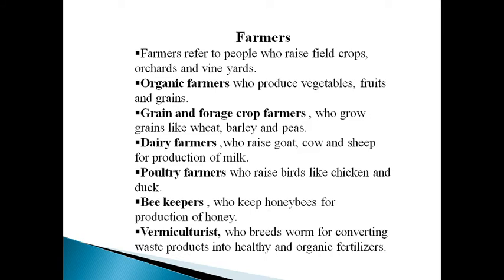Organic farmers produce fruits, vegetables, grains, or livestock without using chemicals. Grains and forage crop farmers grow grains like wheat, barley, and peas. Dairy farmers raise cow, goat, or sheep for production of milk and dairy products.